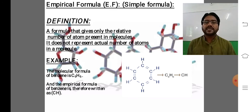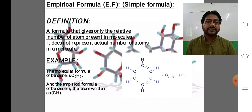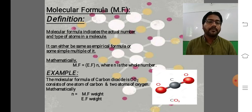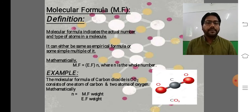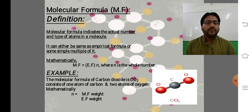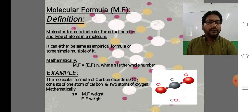C6H6 molecular formula hai aur iski simple form yaani simplified form jo banti hai wo CH — to wo iska empirical formula kehlata hai jo actual number of atoms ko represent nahi karta. Jo actual number of atoms ko represent karta hai wo molecular formula hota hai. Molecular formula indicates the actual number and type of atoms in molecules. It can either be the same as empirical formula or a simple whole-number multiple of it. Jaise carbon dioxide ki example mein carbon 1 aur oxygen 2 hain — yeh aur simplified nahi ho sakta, to yeh iska molecular formula hai. Benzene ka molecular formula C6H6 tha.